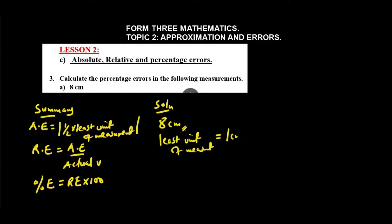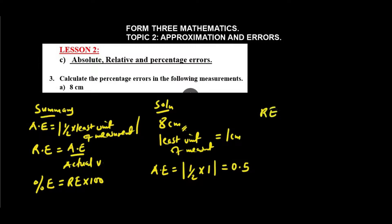From here we can get the absolute error, which is the absolute value of half the least unit of measurement: half of 1, which gives us 0.5. Now proceeding to the relative error — we are on the journey of determining the percentage error.